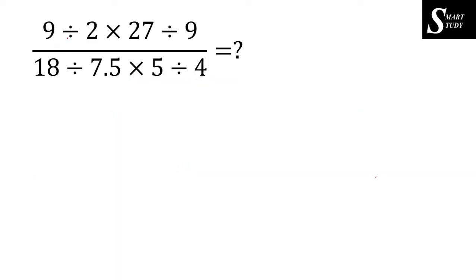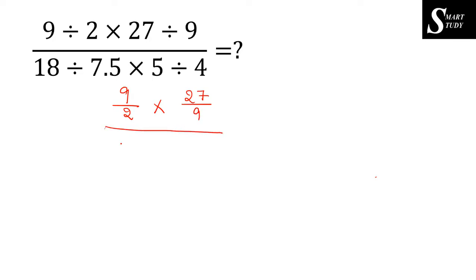The first question is: 9 divided by 2, into 27 divided by 9, whole divided by 18 divided by 7.5, into 5 divided by 4, is equal to question mark. This equation can be rewritten as 9 divided by 2 into 27 divided by 9, whole divided by 18 divided by 7.5 into 5 divided by 4.